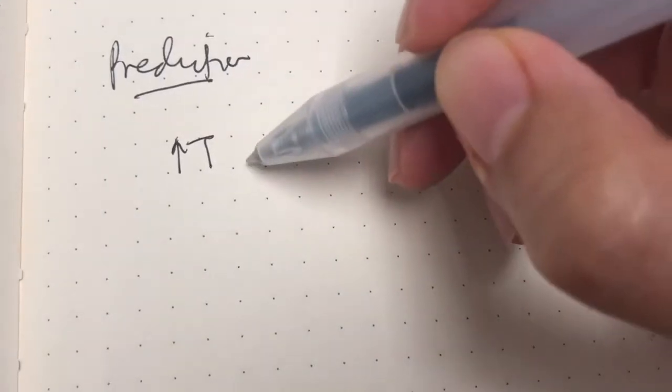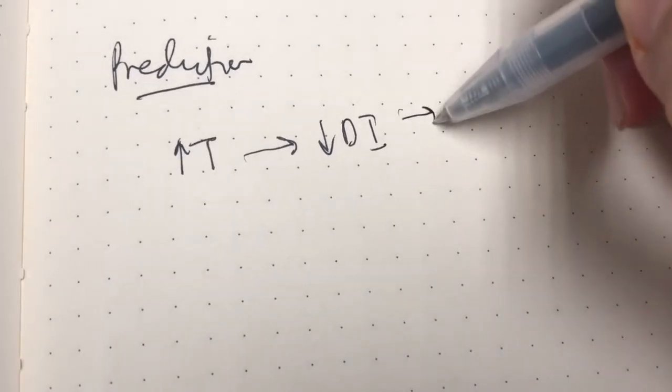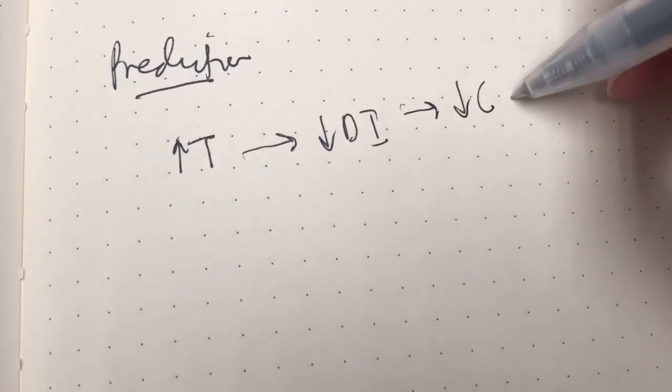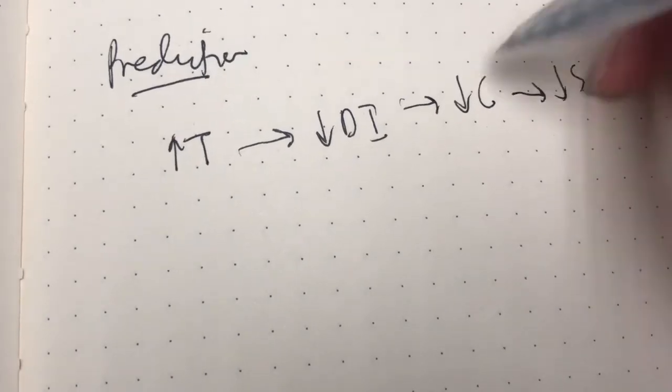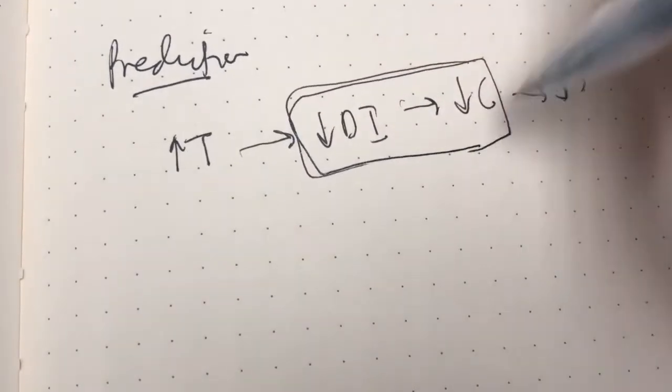when taxation increases, it will lead to a fall in disposable income, which will also lead to a fall in consumption as well as a fall in savings. But more so, this would be the aim. But in practice,